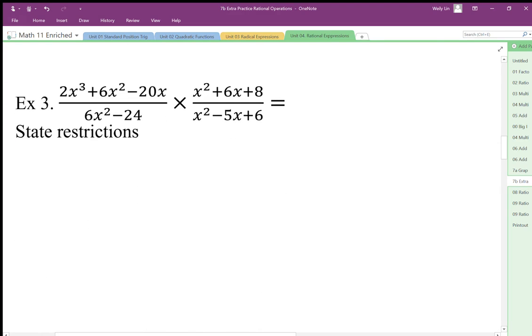For multiplying and dividing, we need to factor first. This time it asks you to state restrictions. Before you try factoring, make sure you take out the greatest common factors. Here we have a greatest common factor of 2x, so we end up with x squared plus 3x minus